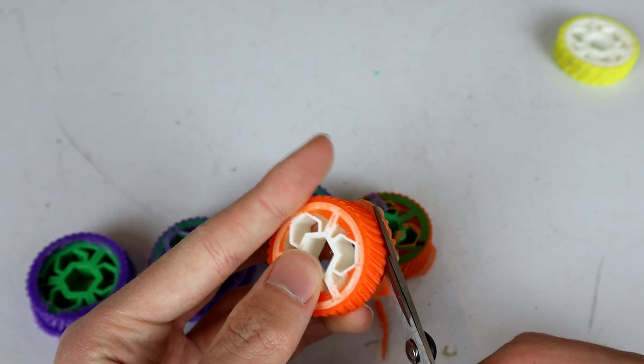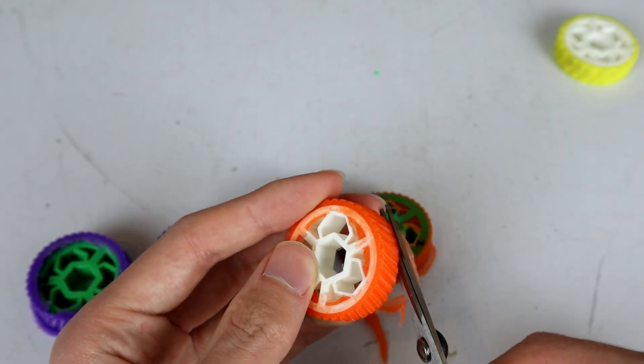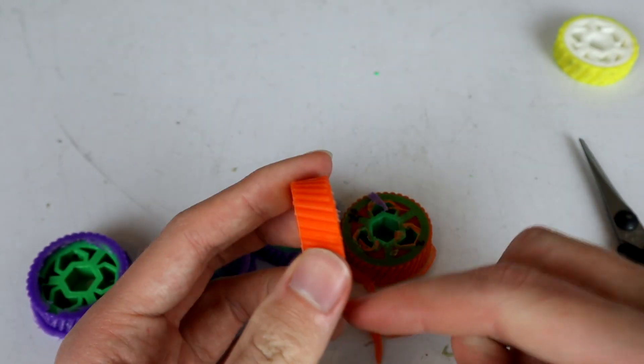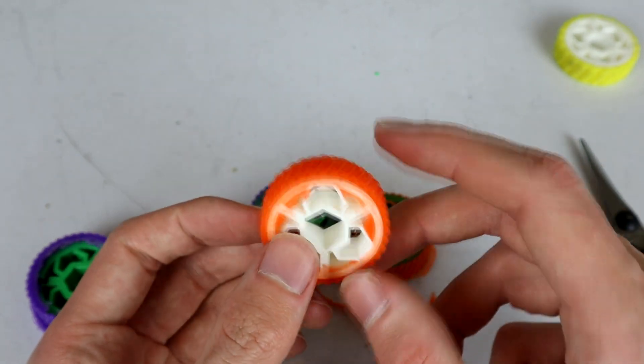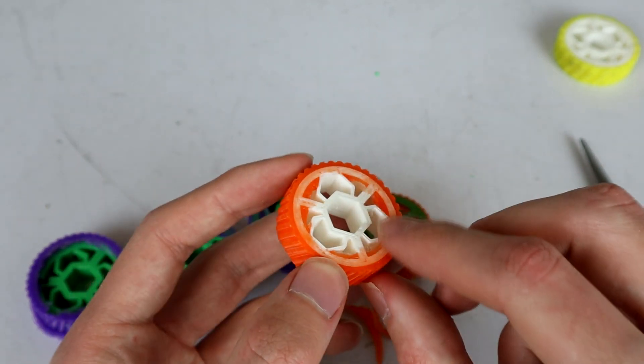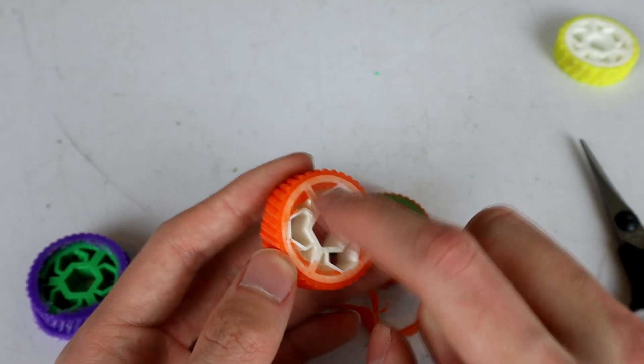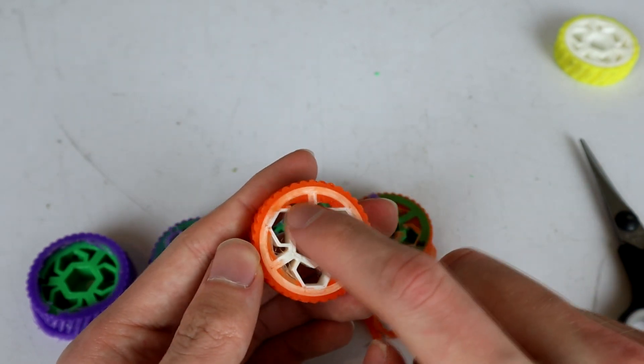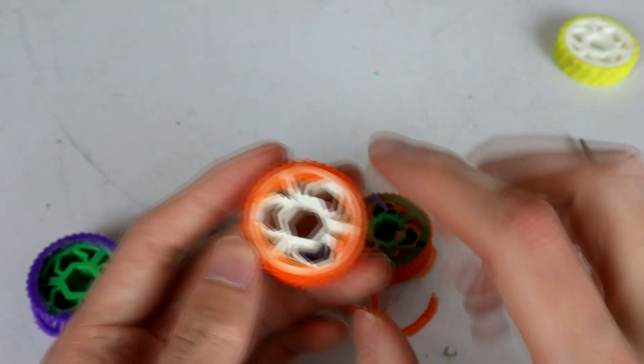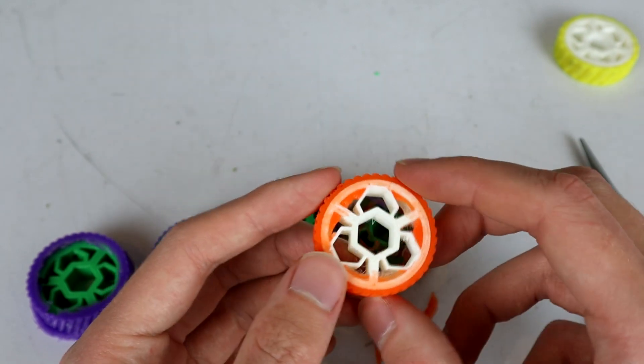It does mean that I lose a tiny little bit of the tread around here but on the grand scheme of things that doesn't matter. If I was being a little bit more picky I would use a blade and clean up these little imperfections in here but you know what I don't really mind.